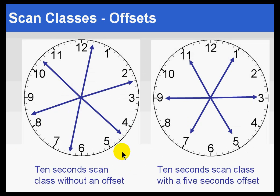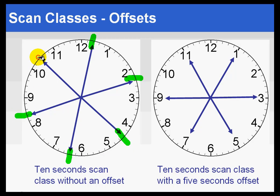Here is another example of scan class and offsets. With 10-second scanning and no offset, we scan exactly once every 10 seconds after the interface starts. Compare that to specifying an offset of five seconds — that means scanning occurs exactly at 5, 15, 25, 35 seconds, etc.